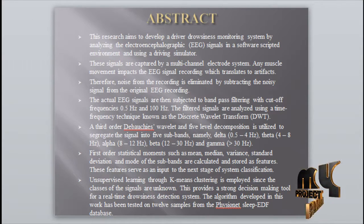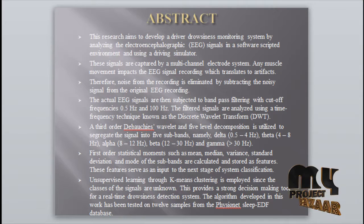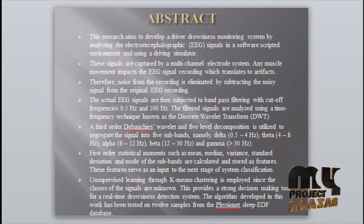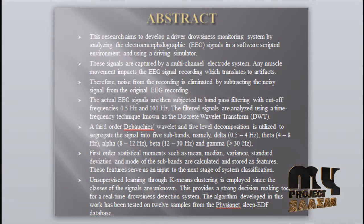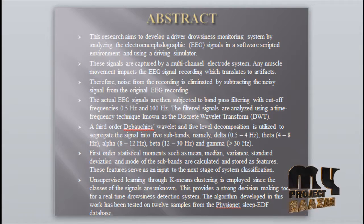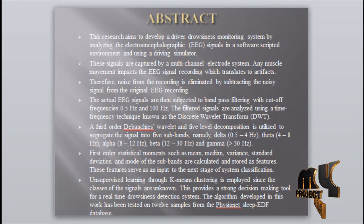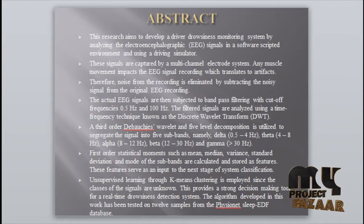These signals were captured by a multi-channel electrode system, and any muscle movement impacts the EEG recording and introduces artifact. From this noisy recording, the noise signal is subtracted from the original EEG recording, and the actual EEG signal is subjected to band-pass filtering to analyze frequencies from 0.5 Hz to 100 Hz.